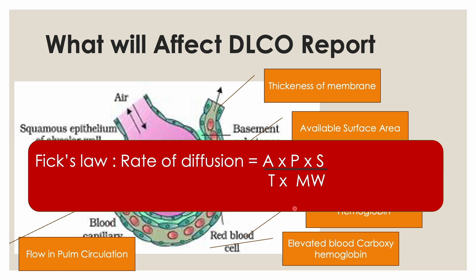Hemoglobin levels also affect diffusing capacity. Since we're using carbon monoxide — which produces carboxyhemoglobin — if a patient already has elevated carboxyhemoglobin, it will reduce the pressure gradient for the incoming carbon monoxide and will also occupy hemoglobin binding sites that would otherwise be used for binding the test carbon monoxide. So elevated carboxyhemoglobin will significantly affect the test results.